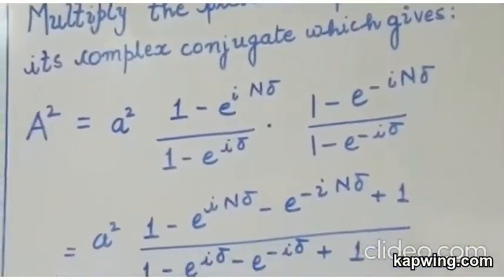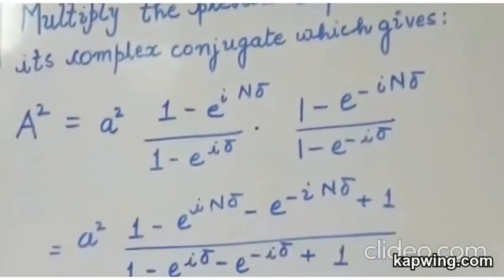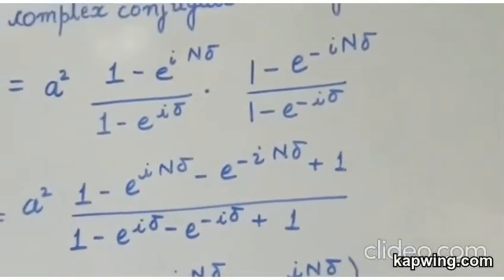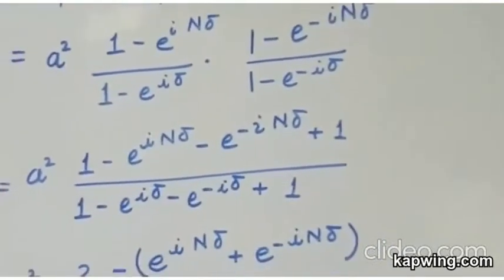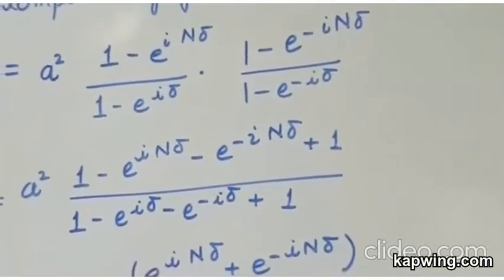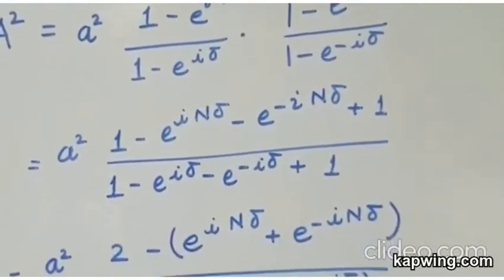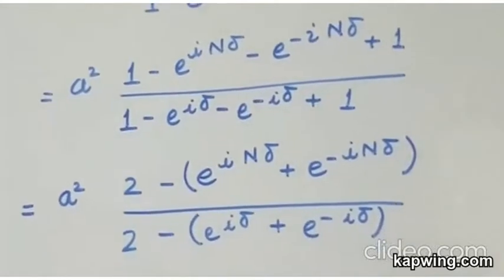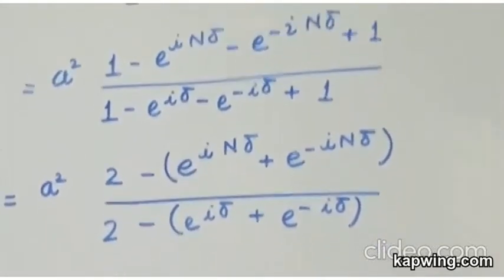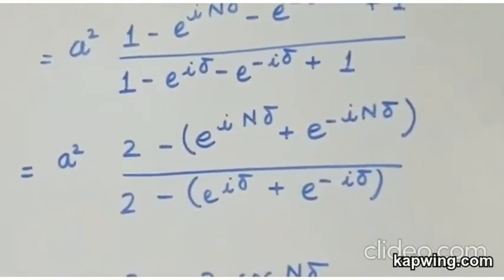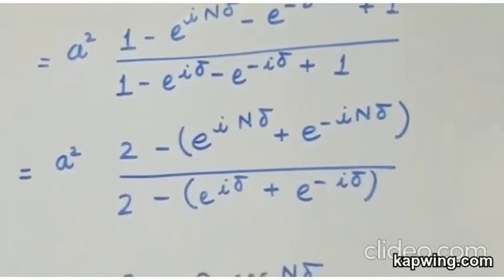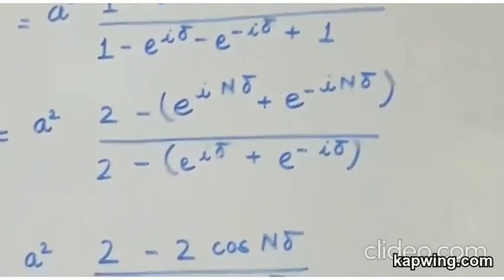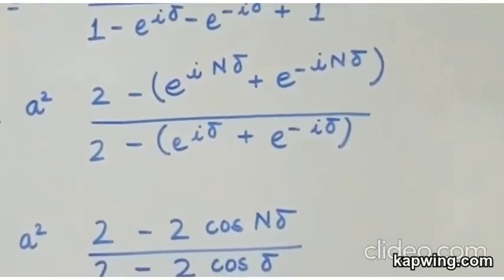The next step is that you multiply the previous expression by its complex conjugate. So what we do is we multiply this expression by its complex conjugate. So you get A square which is equal to A square 1 minus e to the i n delta upon 1 minus e to the i n delta multiplied by 1 minus e to the minus i n delta upon 1 minus e to the minus i delta. Now when you expand the numerator you are going to get 1 minus e to the i n delta minus e to the minus i n delta plus 1. Similarly in the denominator you will get 1 minus e to the i delta minus e to the minus i delta plus 1. So the ones are summed both in the numerator and the denominator and the resultant expression that you get is A square multiplied by first the numerator 2 minus then within the brackets we can write e to the i n delta plus e to the minus i n delta divided by 2 minus open brackets e to the i delta plus e to the minus i delta.